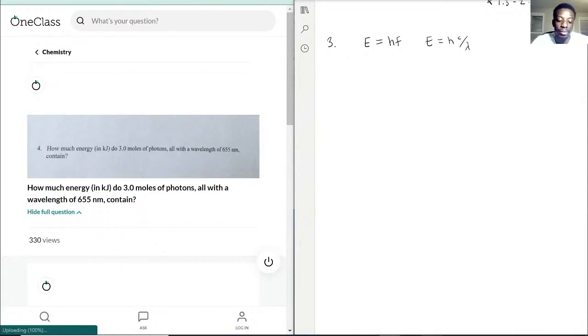Now, they've said there's 3 moles of photons, but this formula only accounts for literally one particle. So we're going to first solve for one particle, and then multiply that by 3 moles of photons, which we'll need Avogadro's number for. Let's start with the one particle first.